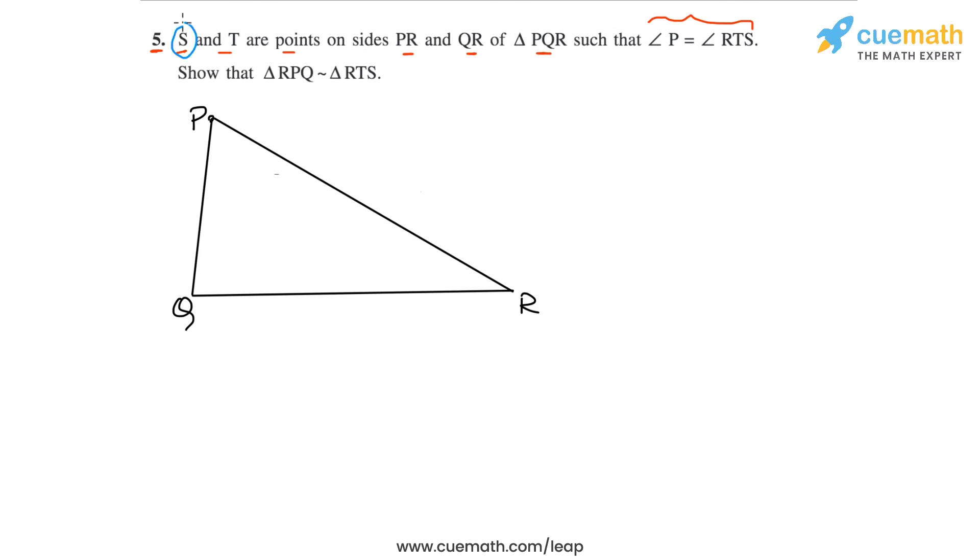Now we are told that S is a point on side PR and T is a point on side QR. So let's take S as this point here and let's take T as this point here. Let's join these two points like this.